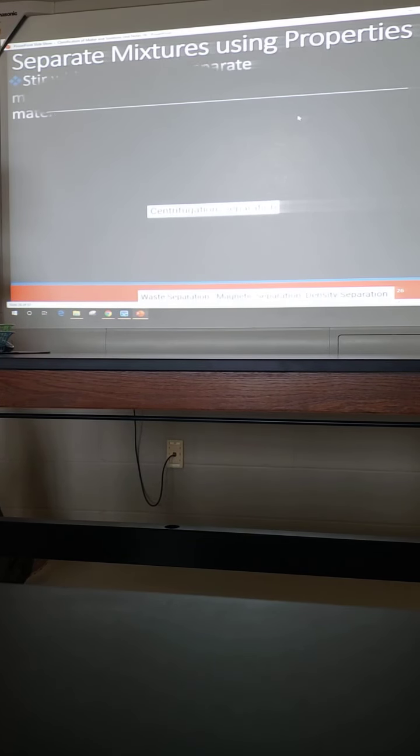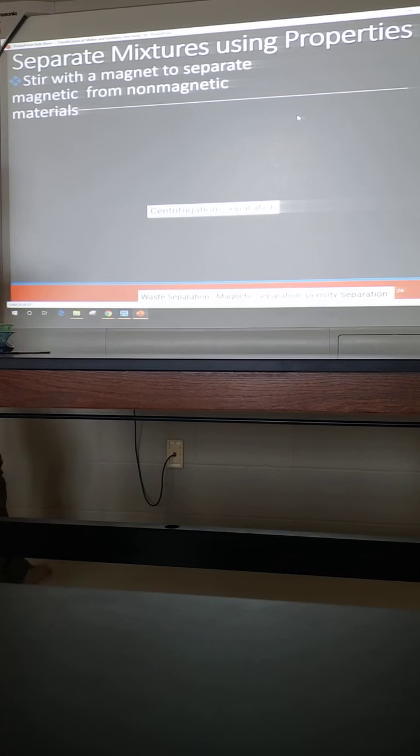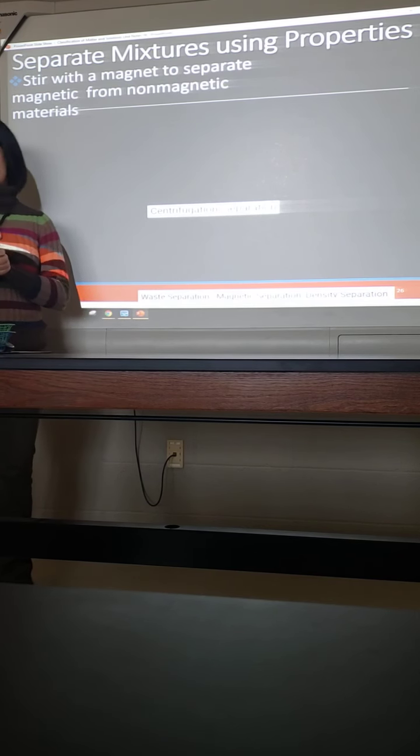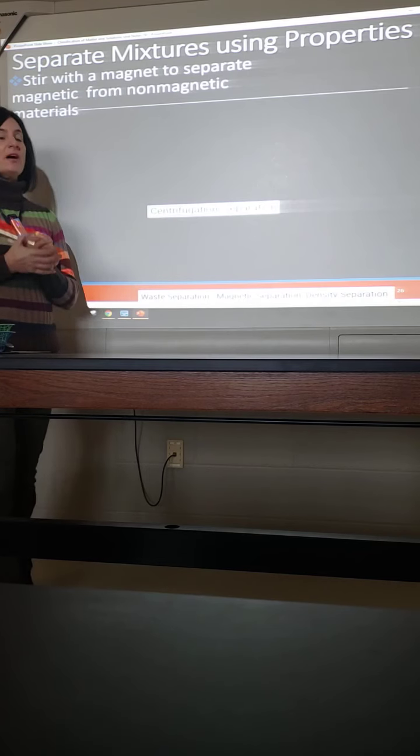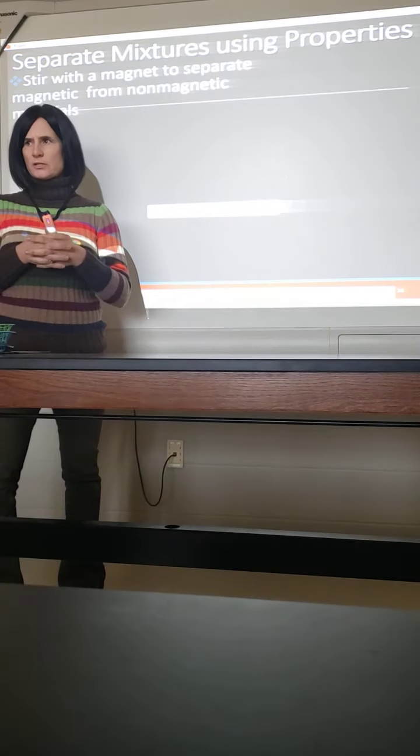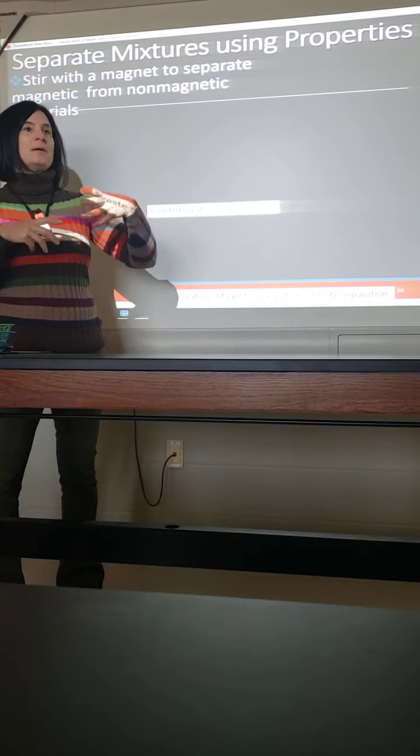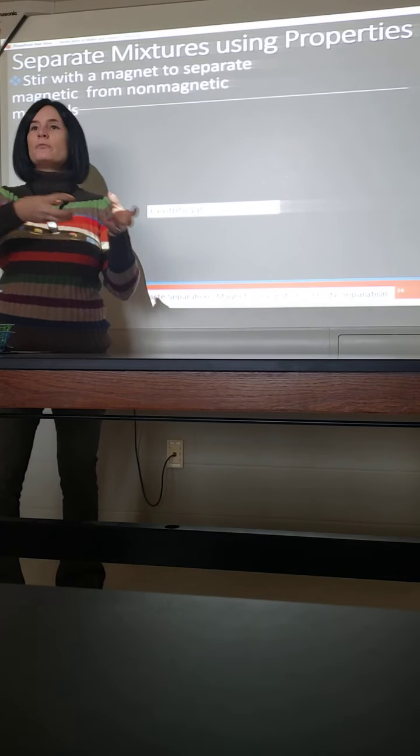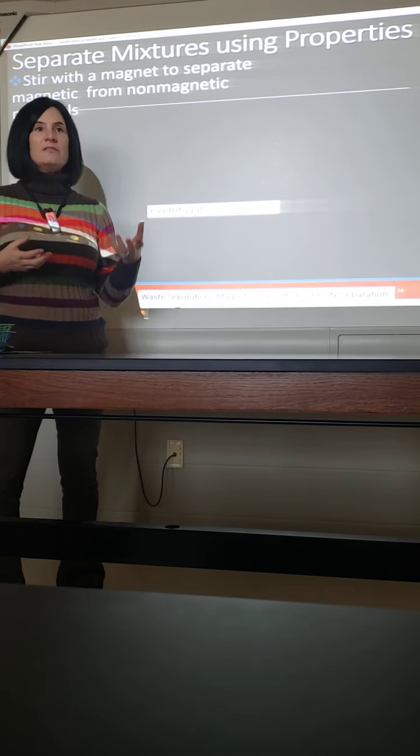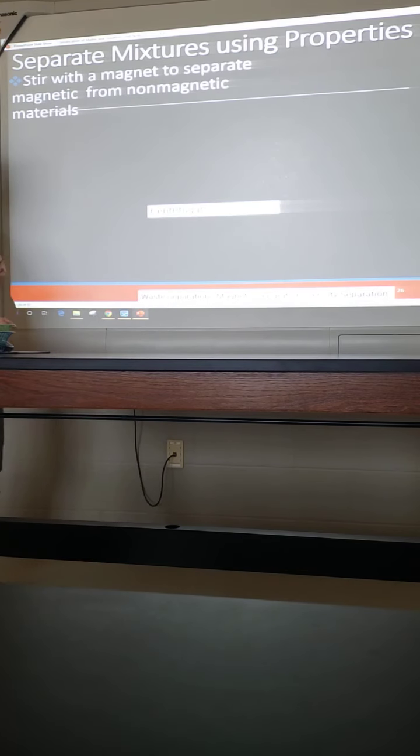So separating a mixture using physical properties, you would use a magnet to possibly separate out the non-magnetic from the magnetic things. Like if you have iron and sand, that was one of our examples. If you take a magnet, the iron is going to be attracted to the magnet, but the sand is not. So it would remove the iron, but it would leave the sand. So the property that would be used is magnetism.